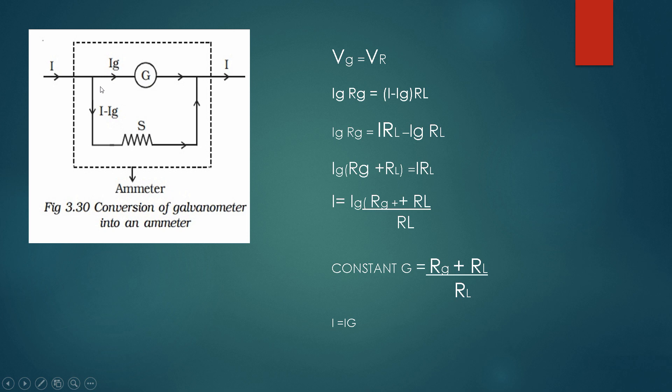For that purpose only, we are connecting a low resistance in parallel to this path. So the max current will flow through here and a small amount of current will flow through here. Like for example, if the input supply is 10 ampere, 1 ampere current will flow through this galvanometer and the remaining 9 amps will flow through this resistance.